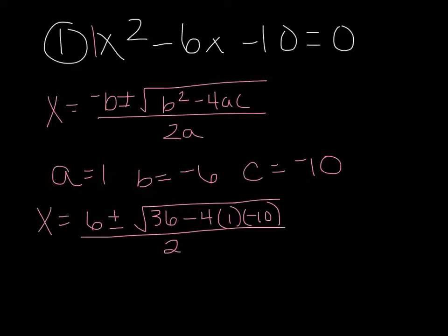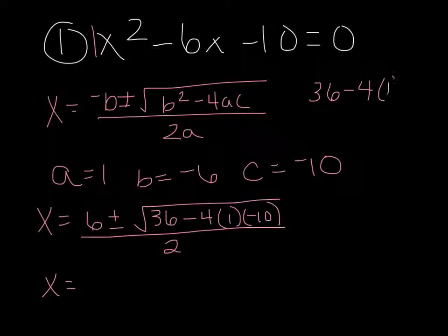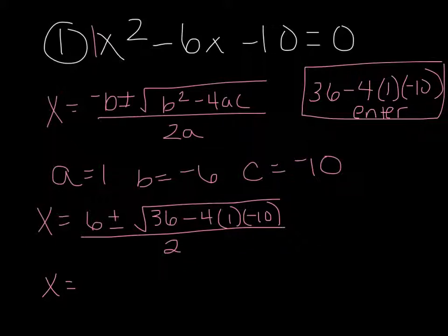Now you're going to simplify just underneath the square root. In your calculators, you would type in: 36 minus 4, parentheses, 1, parentheses, negative 10, parentheses, and then hit enter. When you do that, you're going to end up with 76. So now I'm going to rewrite this as 6 plus or minus the square root of 76, all over 2.